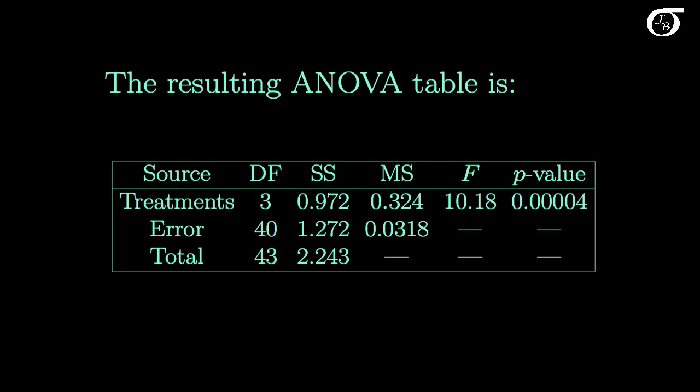In the end we get an F test statistic. This is the F statistic that's testing the null hypothesis that the population means are equal. The p-value given here is the area to the right of this observed test statistic under an F distribution with 3 degrees of freedom in the numerator and 40 degrees of freedom in the denominator.